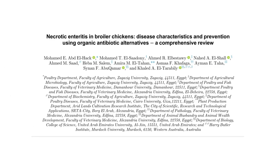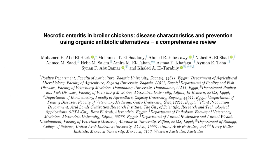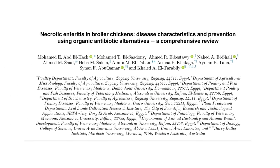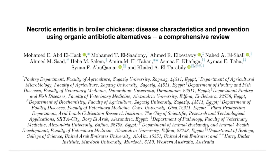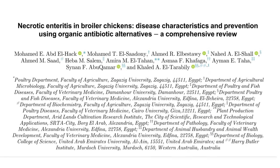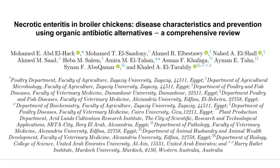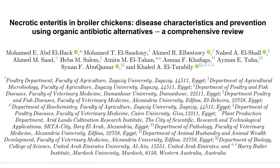For example, if you look at this topic — 'Necrotic Enteritis in Broiler Chickens: Disease Characteristics and Prevention Using Organic Antibiotic Alternatives — A Comprehensive Review' — you can easily say that it's a review article as it is labeled as 'comprehensive review.'